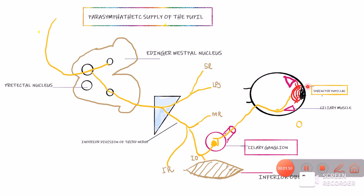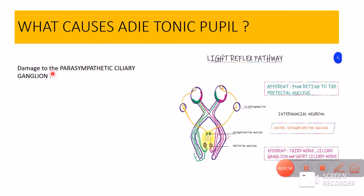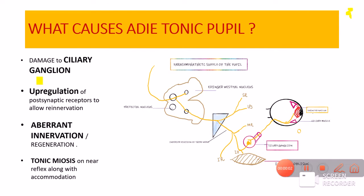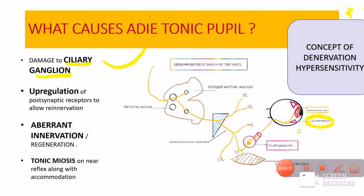This basic information is very important to understand what causes Adie's tonic pupil. In Adie's tonic pupil, it is basically damage to the parasympathetic ciliary ganglion. Damage to the parasympathetic ciliary ganglion leads to the Adie's tonic pupil. Once there is damage to the ciliary ganglion, the nerve supply to these muscles is affected. In response to the damage, a process called denervation hypersensitivity or supersensitivity occurs. The receptors present in the sphincter pupillae and the ciliary muscles will actually increase in number — this is called upregulation of post-synaptic receptors to allow re-innervation.